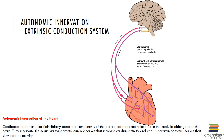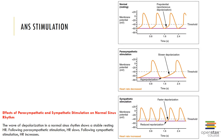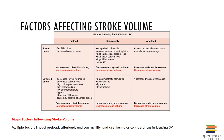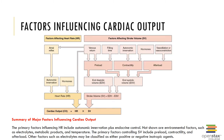Here you can see the autonomic innervation of the heart, demonstrating the cardioaccelerator and cardioinhibitory areas. Sympathetic stimulation can increase normal sinus rhythm, while parasympathetic stimulation can decrease it. This slide also demonstrates the factors affecting stroke volume — preload, contractility, and afterload — and how those factors influence stroke volume. This is a summary of all the major factors influencing cardiac output.